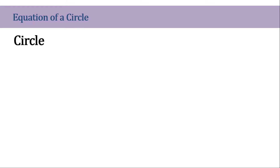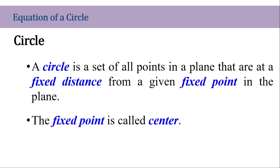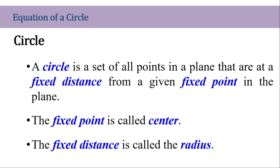Let's recall first what is the definition of a circle. A circle is a set of all points in a plane that are at a fixed distance from a given fixed point on a plane. The fixed point is what we call the center of the circle, and the fixed distance from all other points is what we call the radius.